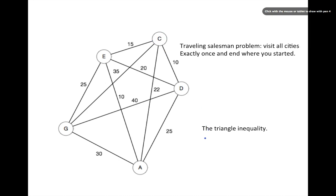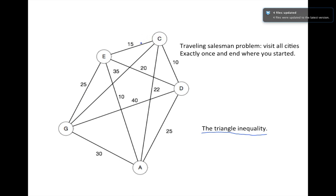In general this is a pretty hard problem, but we're going to add a condition to make it a little easier. The condition is called the triangular inequality, and it means that if you go from city C to city G, the distance you have to cover is at most the distance of going through an intermediate city. So there are no shortcuts through a third point — that's the triangular inequality. Under that assumption we will find an approximation to the shortest path traveling salesman problem.